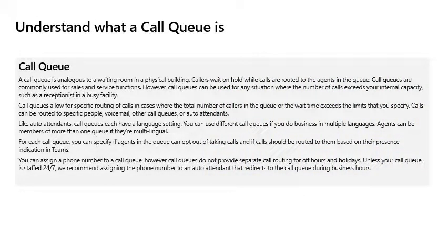Understanding what a call queue is. A call queue is very similar to a waiting room in a physical building. Callers wait on hold while calls are routed to the agents in the queue. Call queues are commonly used for sales and service functions. However, call queues can be used for any situation where the number of calls exceeds the internal capacity, such as a receptionist in a busy facility. Think about a call center when you call to place a reservation — you are placed in the queue listening to music, and as agents become free, the call is routed to an available agent.